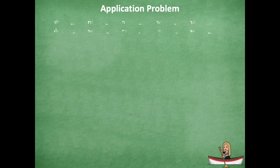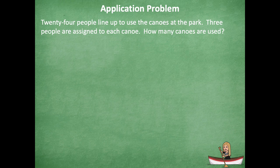So here's our application problem. It says 24 people line up to use the canoes at the park. Three people are assigned to each one. How many canoes are used? So I want you guys to pause the video and solve this problem. If you want to use a tape diagram, you're welcome to use that. Use any strategy you'd like to solve for how many canoes are used. Go ahead and pause and then click play when you're ready to go over it together.